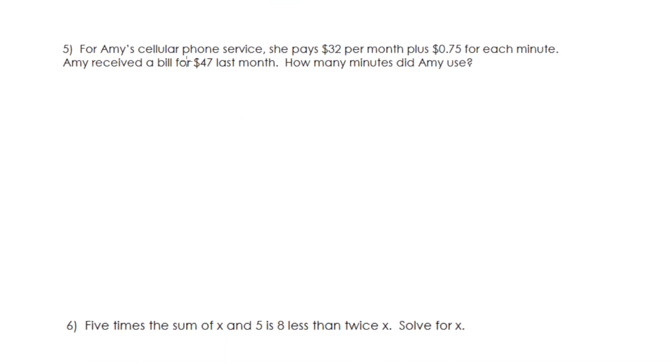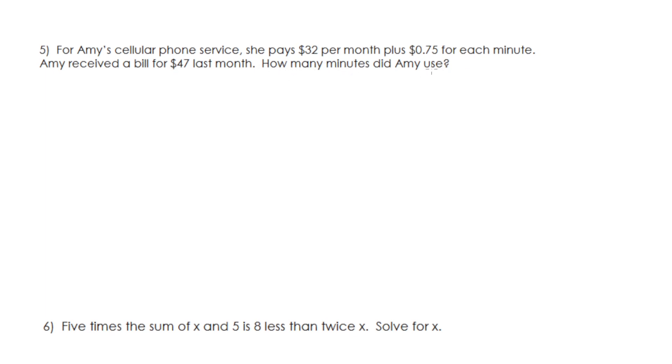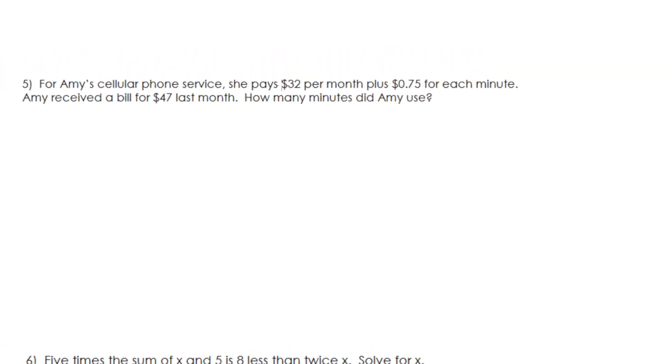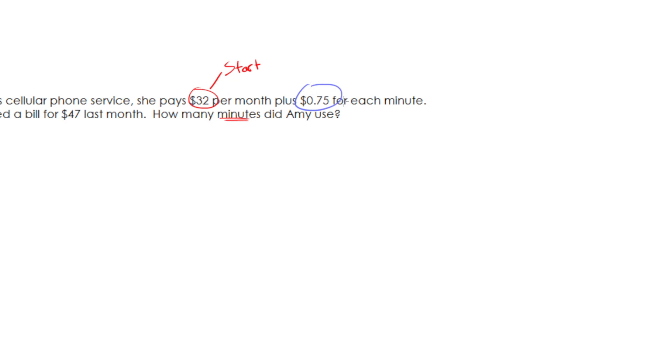Amy's cellular phone service. She pays 32 per month. Now my ears are tingling. If it's 32 per, that must be a changing amount, plus this one for each minute. Now this actually got me tricked because it's going to be how many minutes. So this is why word problems are confusing. Even though it says per month, since I am talking about minutes as my x, this is actually going to be my starting value, my start. And this right here is the each minute. So this is the changing amount.